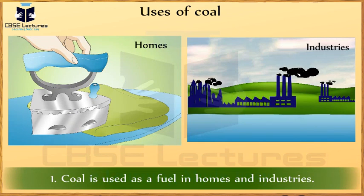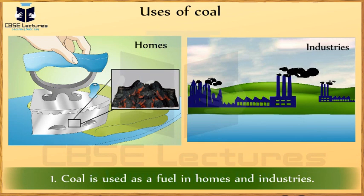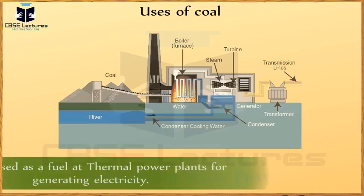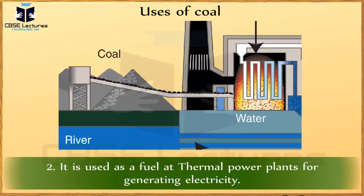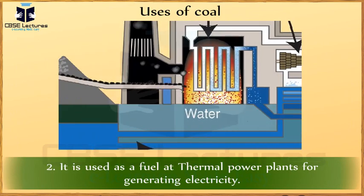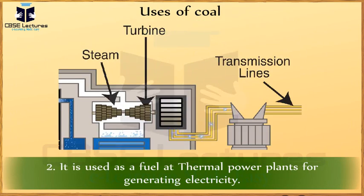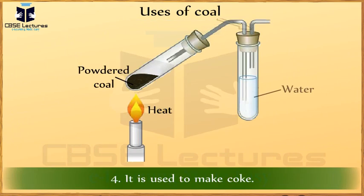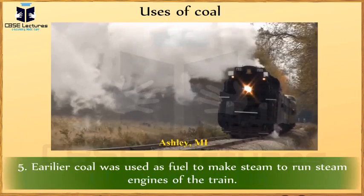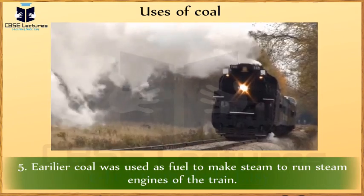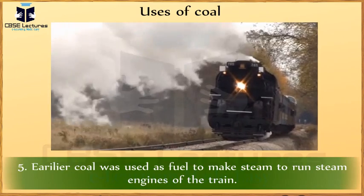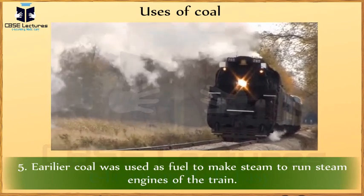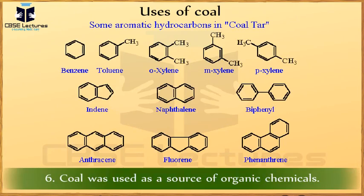Coal is used as fuel in homes and industry. It is used as fuel at thermal power plants for generating electricity. Coal is used for making coal gas, which is an important industrial fuel. Earlier, coal was also used as fuel to make steam to run steam engines of trains.